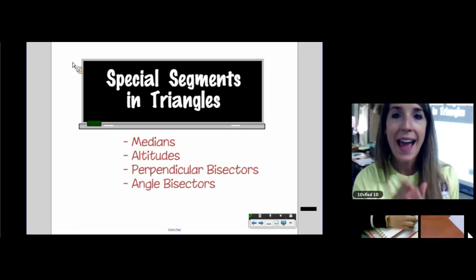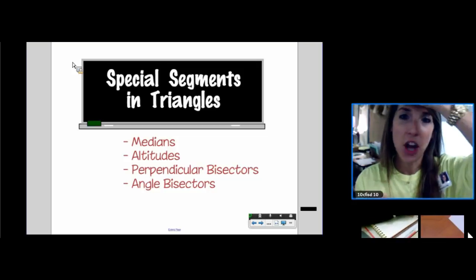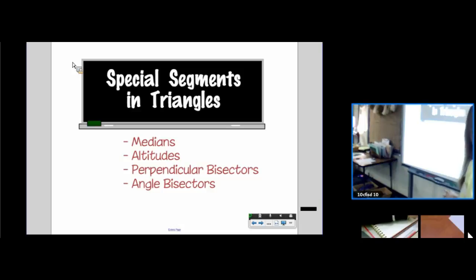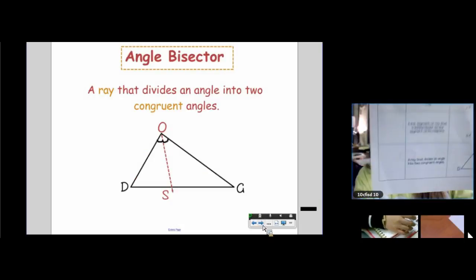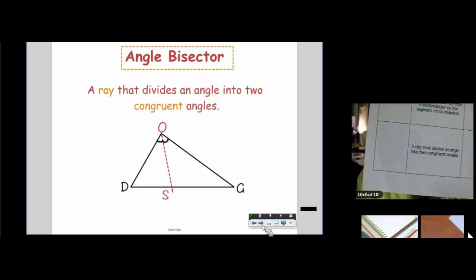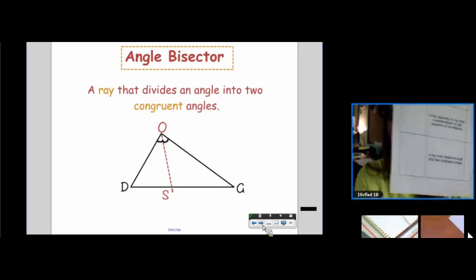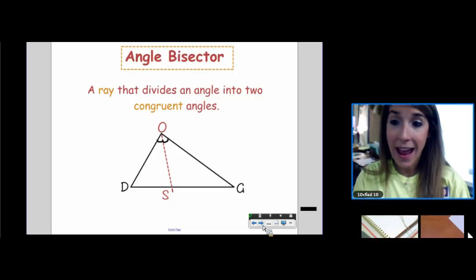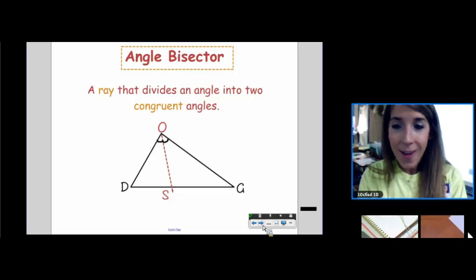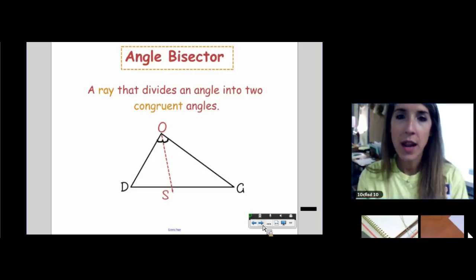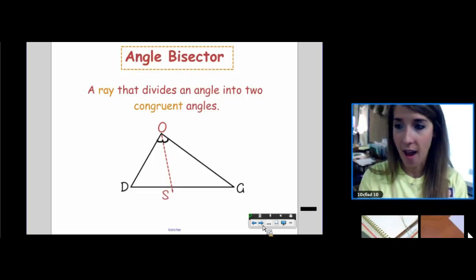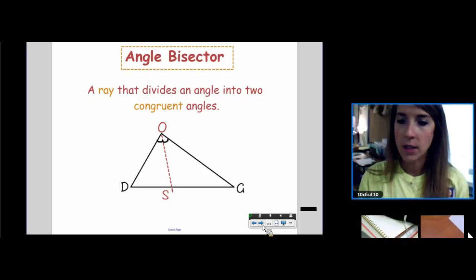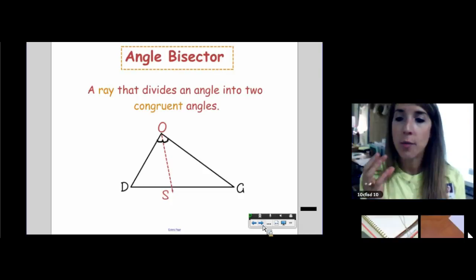Each of these special segments has a job to do. What we're going to learn today is their job description. We're actually going to start with the very last one on your sheet because it's the one you already know about. In that blank, write the word angle bisector. Since this isn't new, we won't spend a long time on it. An angle bisector is technically a ray that divides an angle into two congruent angles. So an angle bisector's job is to cut the angle in half. What symbols do you add to the picture when you have an angle bisector? Very good. When you draw an angle bisector, you add arcs to your picture. You have bisected the angle.